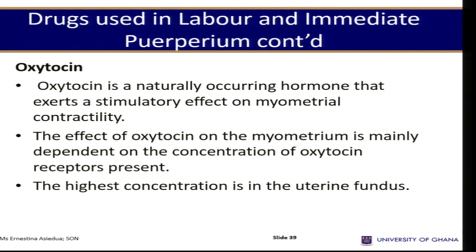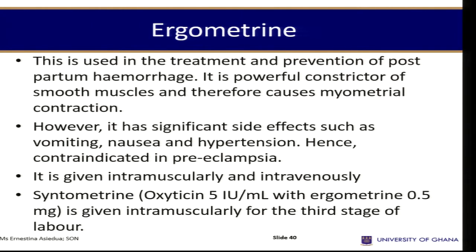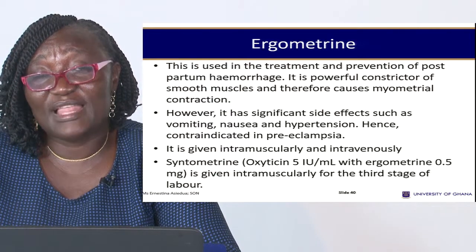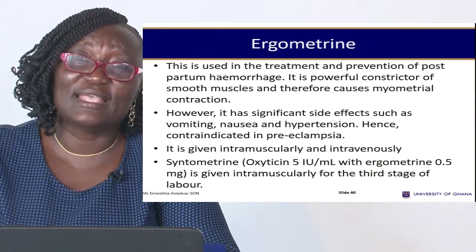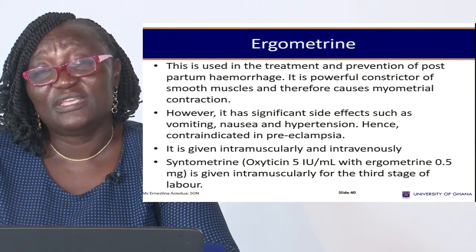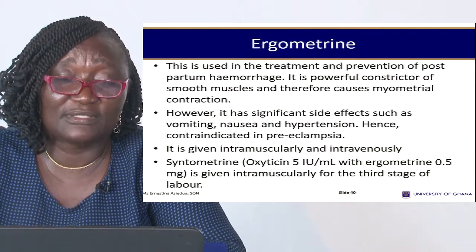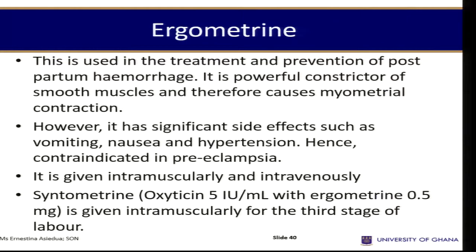Oxytocin is widely used and is a naturally occurring hormone that exerts stimulatory effects on myometrial contractility. The effect of oxytocin on the myometrium is mainly dependent on the concentration of oxytocin receptors present; the highest concentration is in the uterine fundus. Oxytocin also works on the breast — it causes the nipple to become erect and causes myoepithelial cells to contract and push out the milk content. After delivery, oxytocin contracts both the uterus and the breast to bring out breast milk.